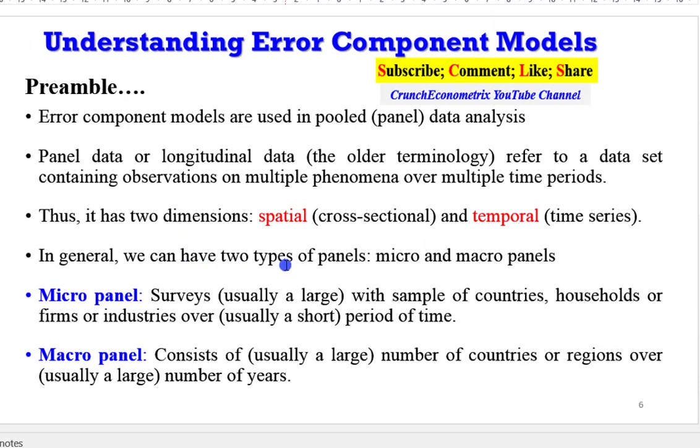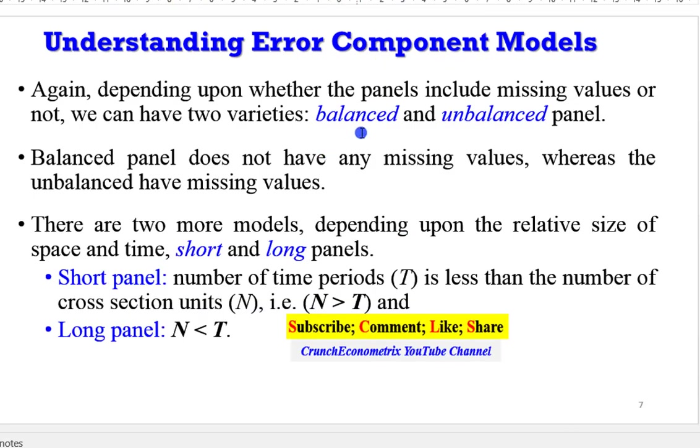In general, there can be two types of panels, micro-panel and macro-panel. A micro-panel is a survey panel with a large sample of units over usually a short period of time, while a macro-panel consists of a large number of groups or units over a large number of years. Also, we can have balanced and unbalanced panel. A balanced panel does not have any missing values, whereas an unbalanced panel have missing values.